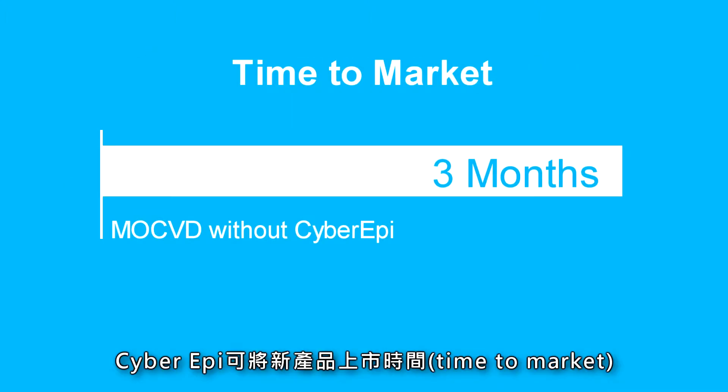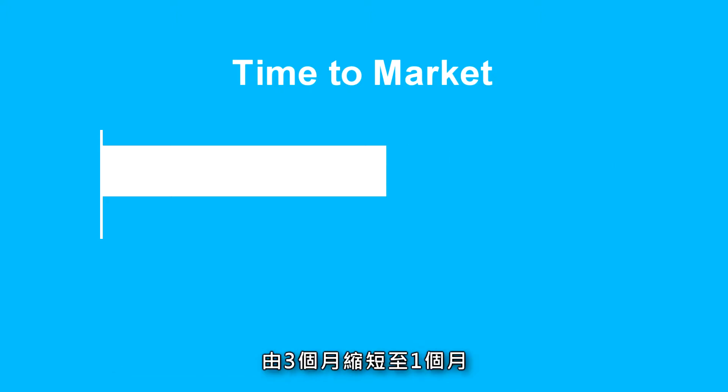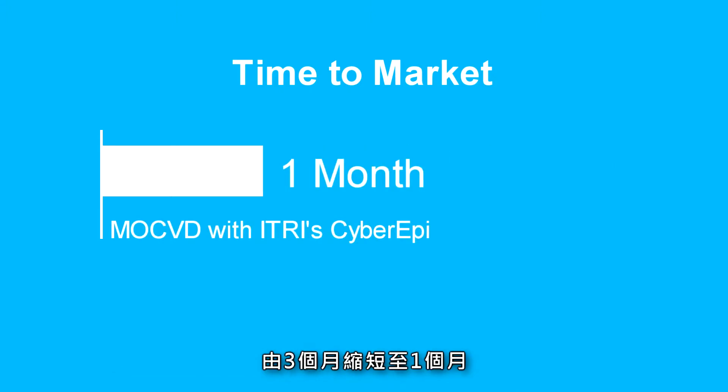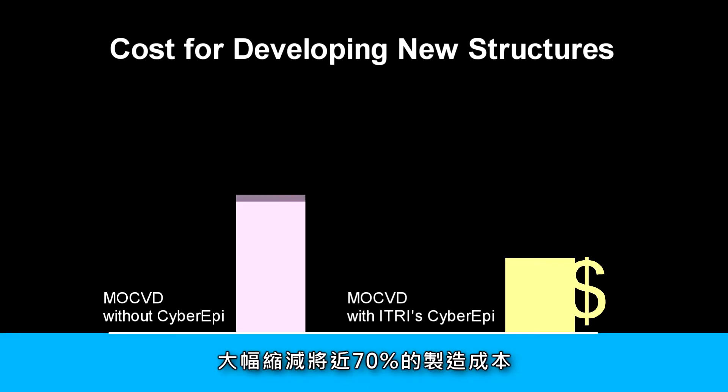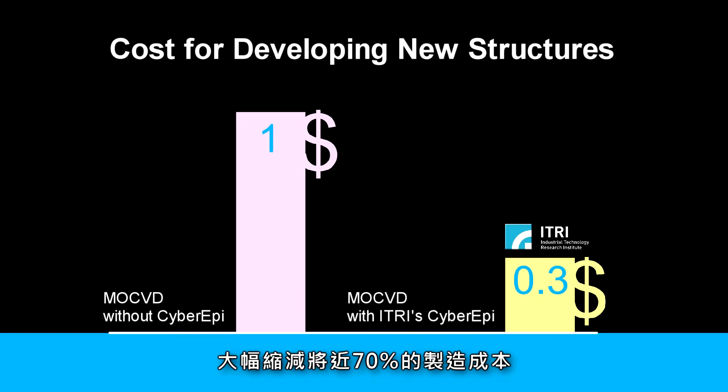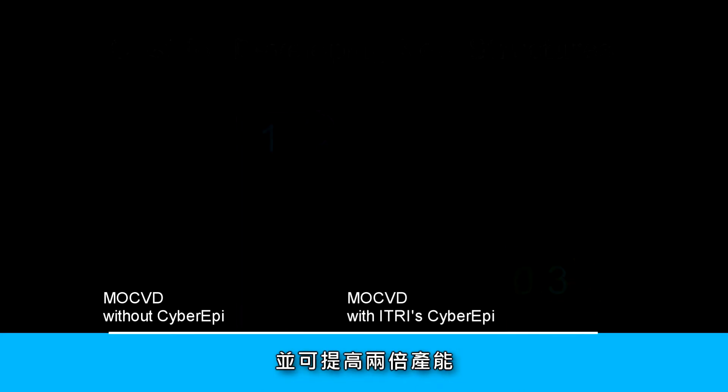CyberEpi can slash time to market for new products from three months to one month, cut manufacturing costs by up to 70%, and double productivity.